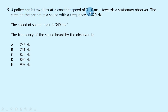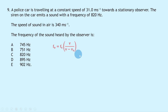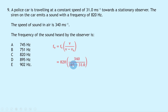Question 9: A police car travels at 31.0 m/s towards a stationary observer. Its siren emits 820 Hz; speed of sound is 340 m/s. Using the Doppler equation fo = fs × v / (v − vs), with a negative denominator since the source moves towards the observer: fo = 820 × 340 / (340 − 31.0) = 902 Hz — option E.